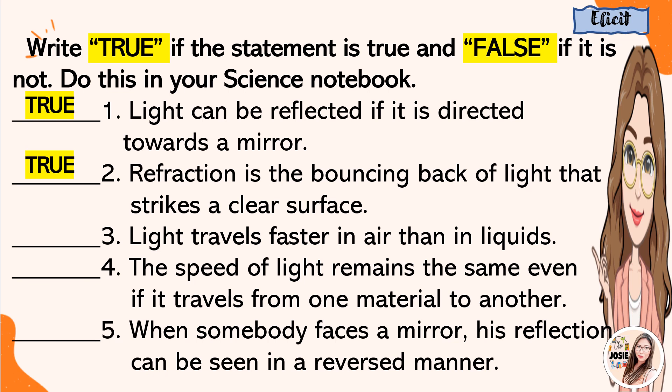Number 3, light travels faster in air than in liquids. It is true. Number 4, the speed of light remains the same even if it travels from one material to another. The answer is false. Number 5, when somebody faces a mirror, his reflection can be seen in a reverse manner. The answer is true.